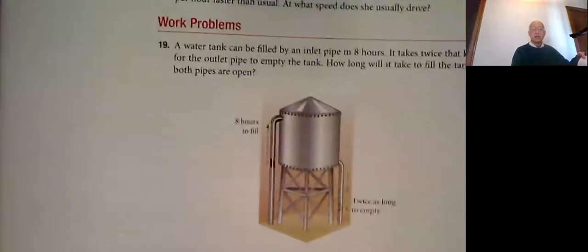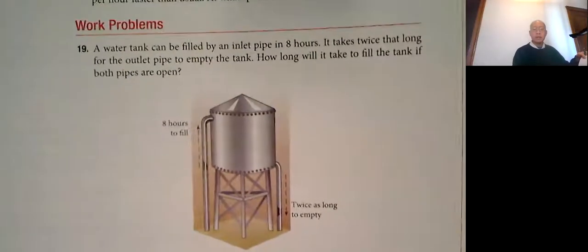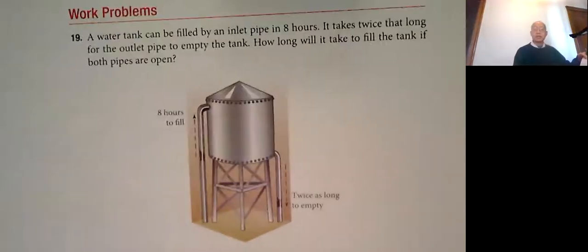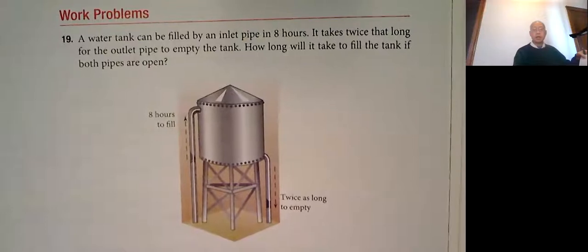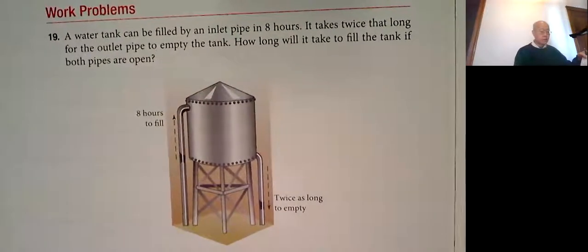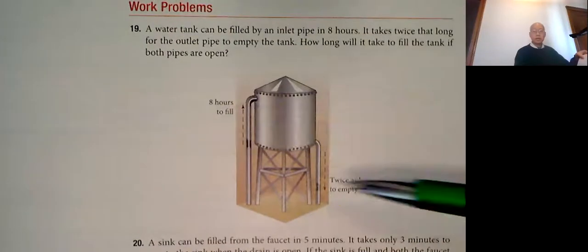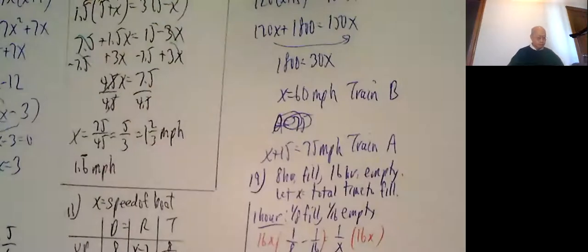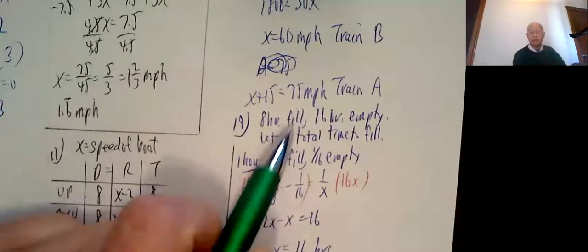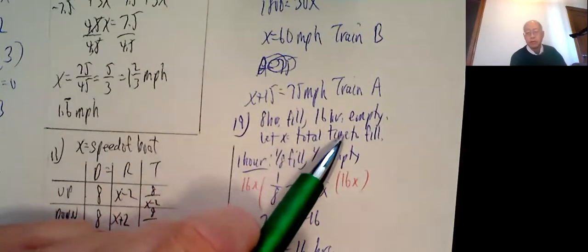And then 19, work problems. A water tank can be filled by an inland pipe in eight hours. It takes twice that long, that means 16 hours, the outlet pipe to empty the tank. How long will it take to fill if both pipes are open? So eight hours to fill, twice as long, which means 16 hours to empty. Let x be the total time to fill. So consider what happens in one hour.